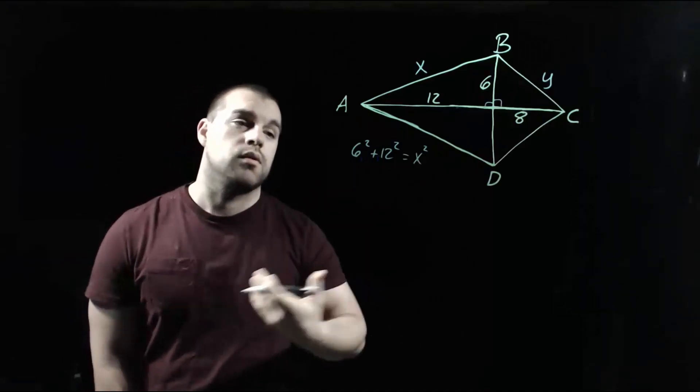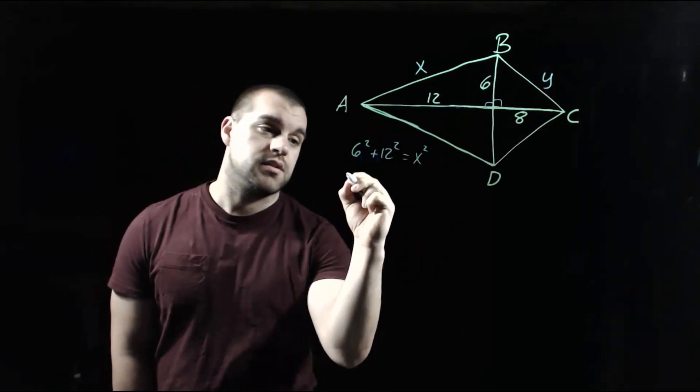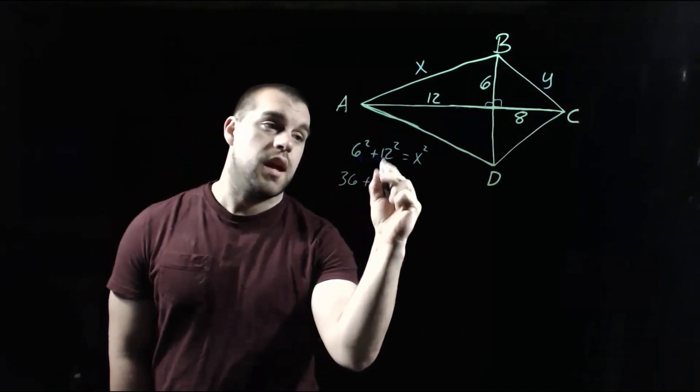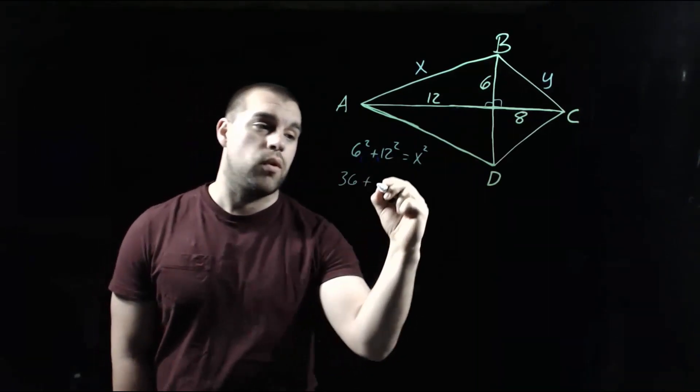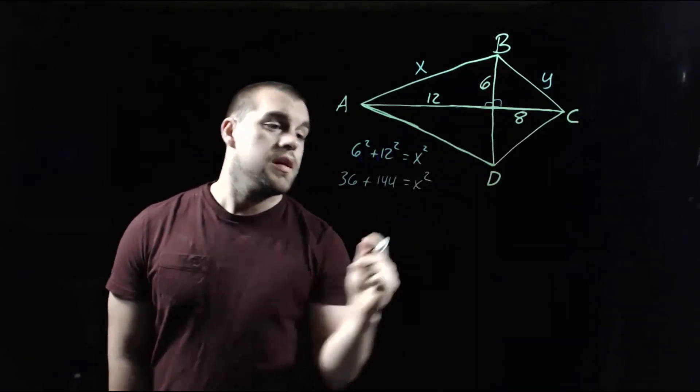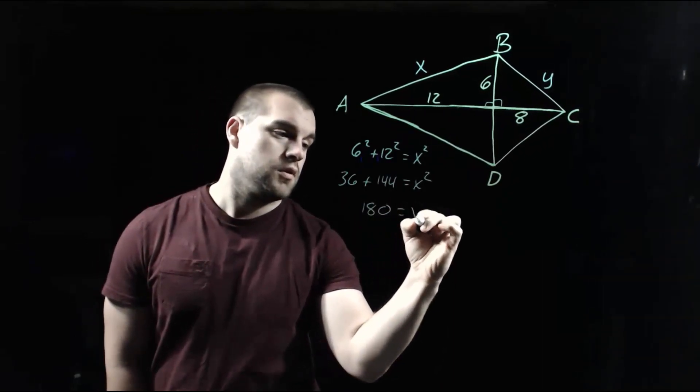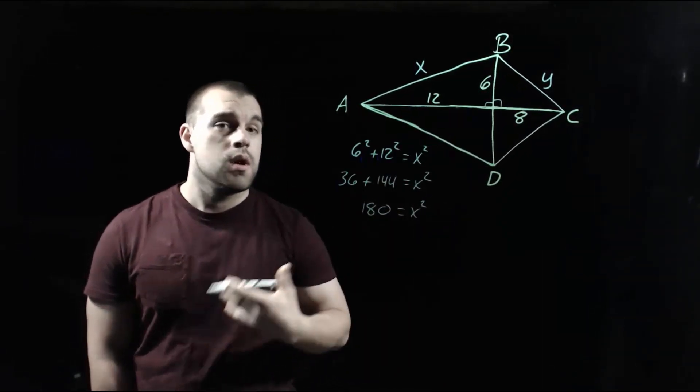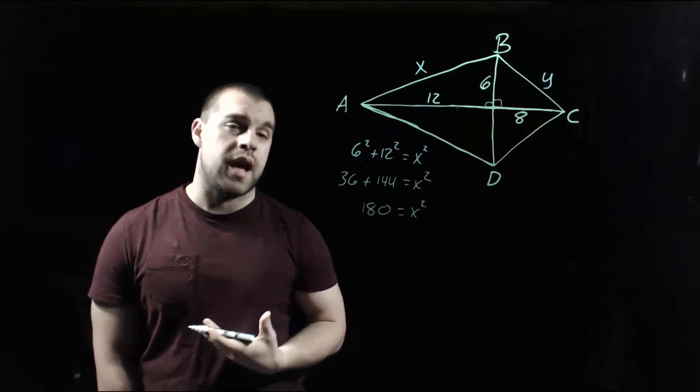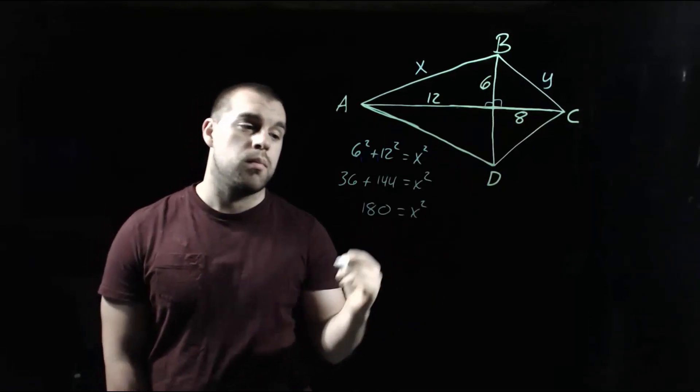Now, if we take care of squaring those things on the left-hand side, 6 squared is 36, and 12 squared is 144. Then if we add those together, we get 180 as our x squared value. But we don't want x squared, we want just x, so we have to square root both sides.